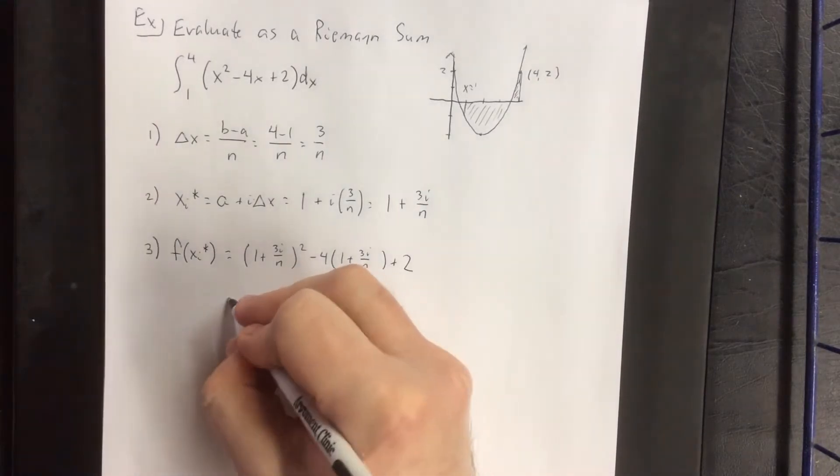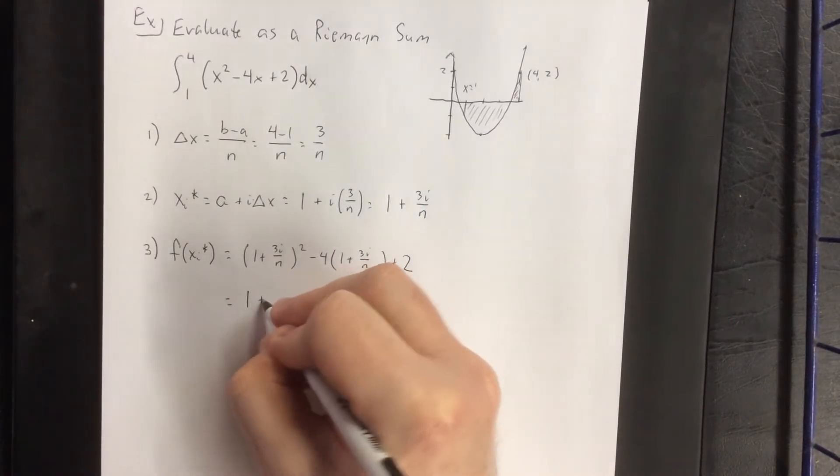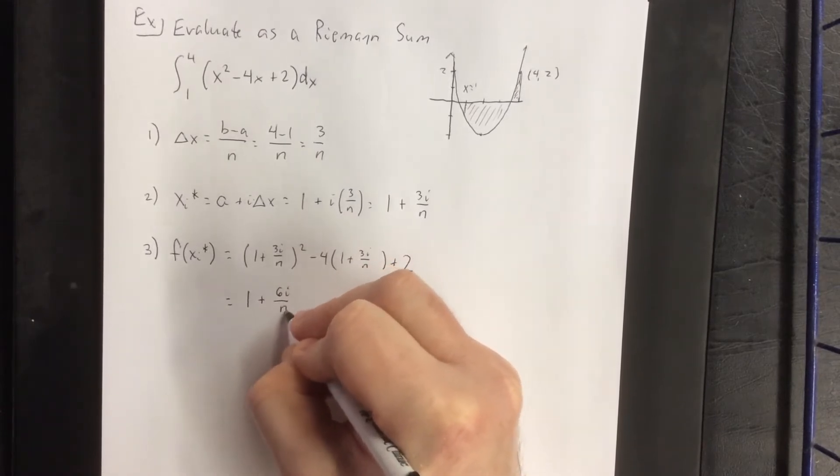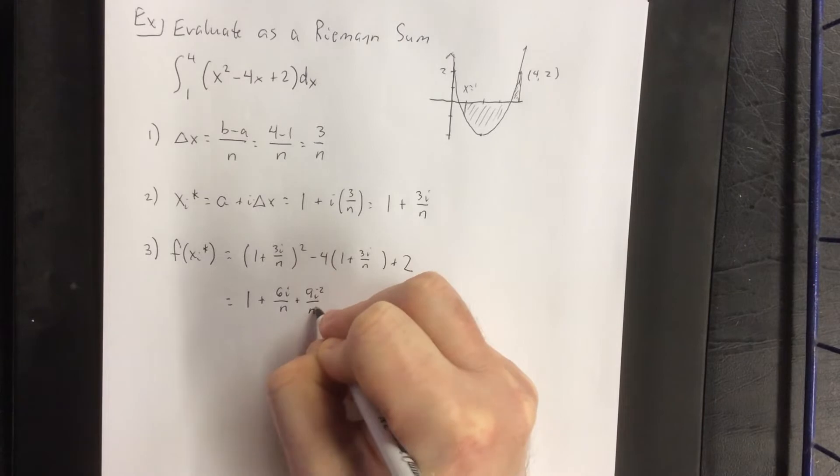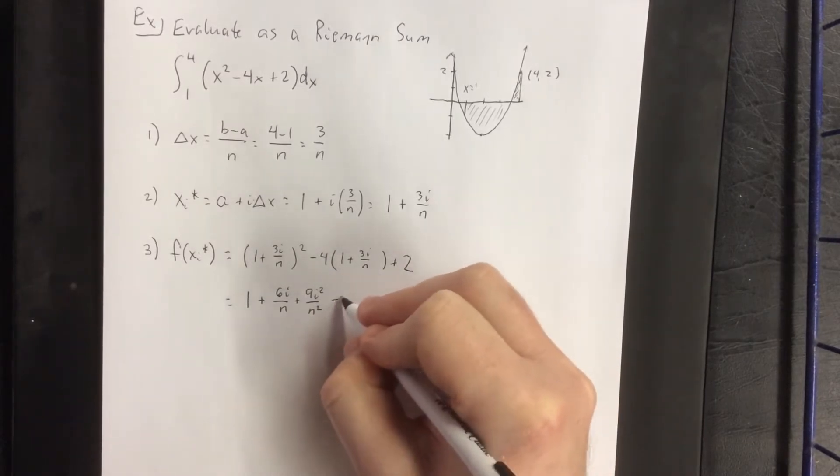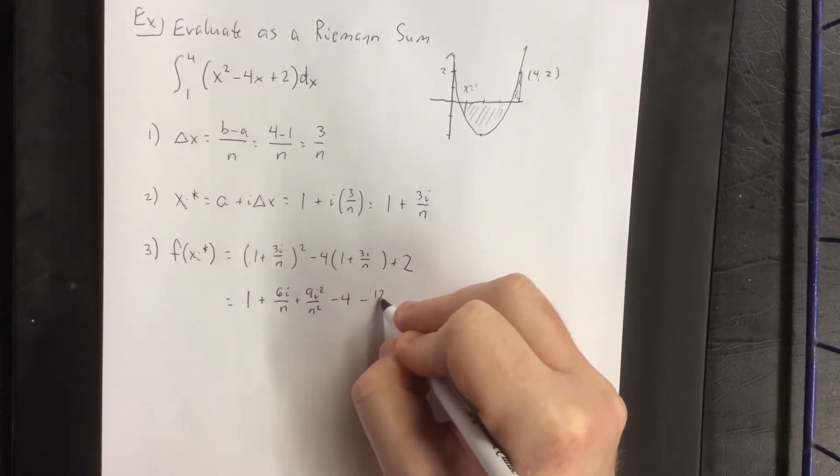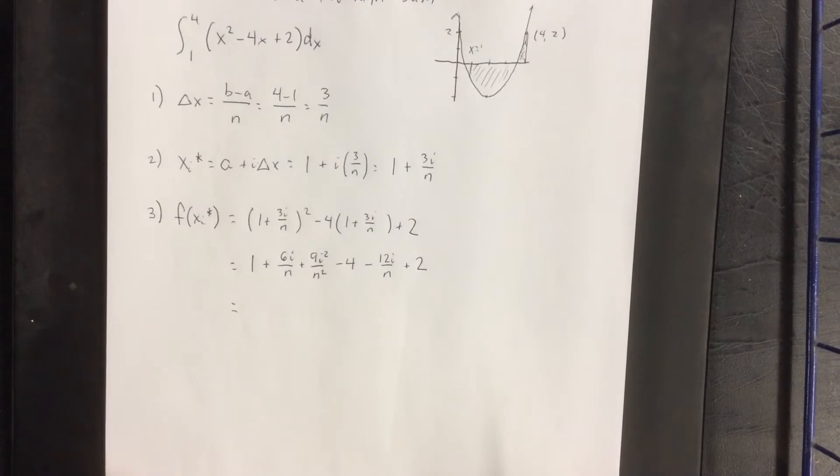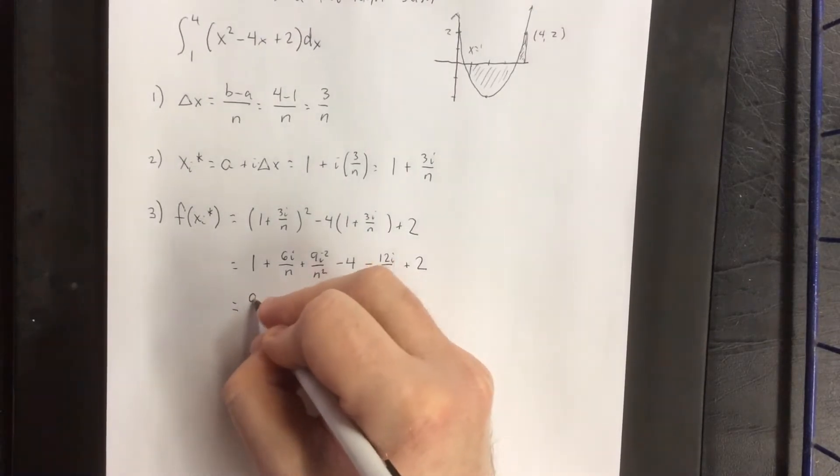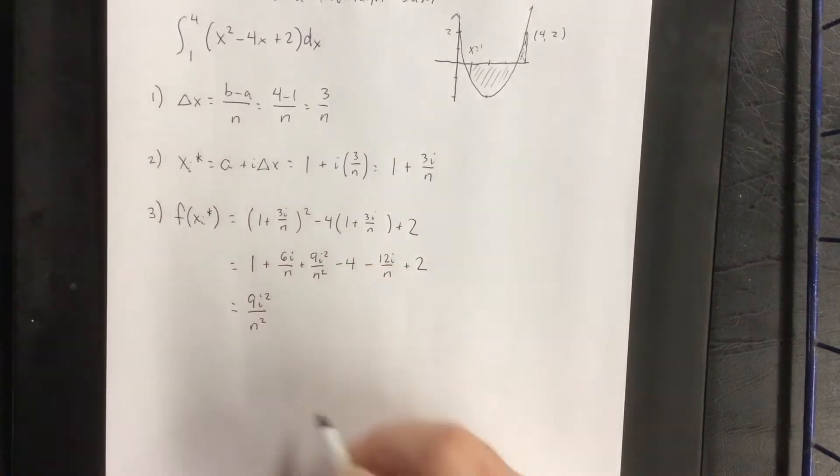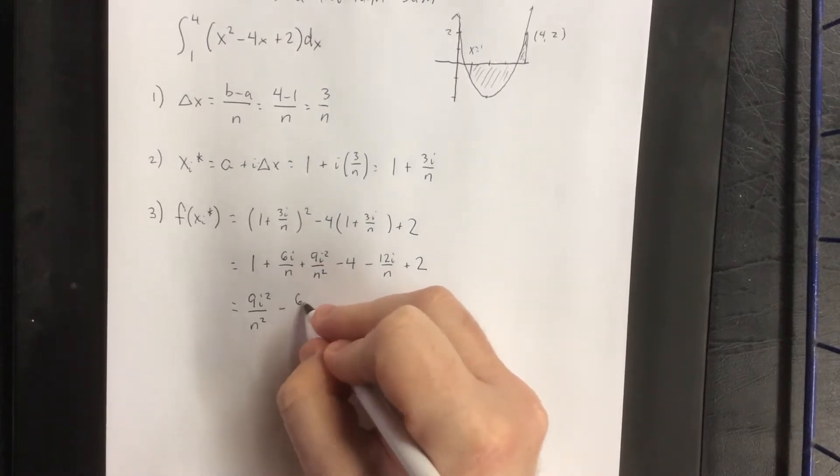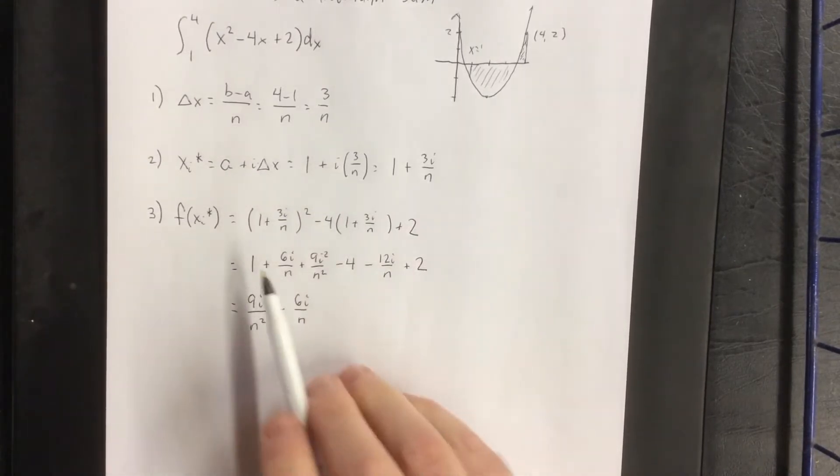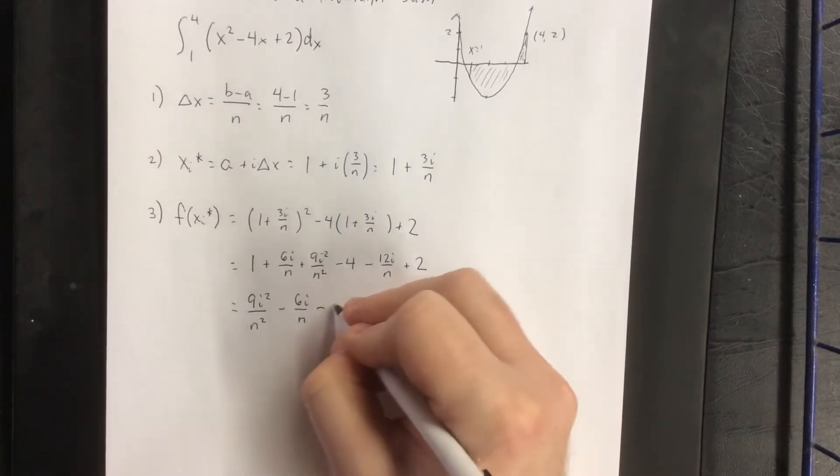Expanding and simplifying wherever possible, expanding the first gives us 1 plus 6i over n plus 9i squared over n squared. Applying the distributive property, this will be minus 4 minus 12i over n and we'll see a plus 2 down at the end. Combining my like terms, I'm going to list my i squared terms first. So 9i squared over n squared. We have plus 6i over n minus 12i over n, that'll be minus 6i over n. 1 minus 4 plus 2 will be minus 1.